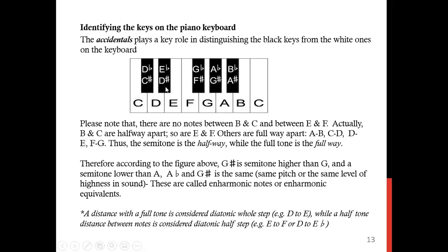For E, there is no black key raising E by a semitone, so we don't have anything to name there. Let's come to F: the first black key in front of F is F sharp. Then G sharp, A sharp — name all those black keys like that.